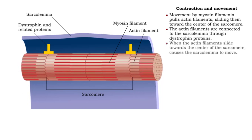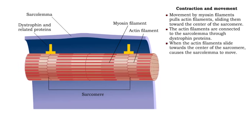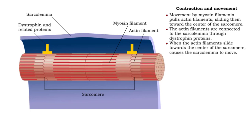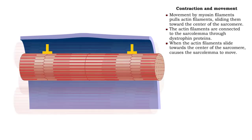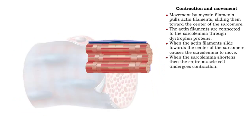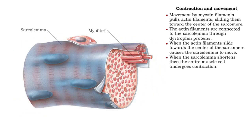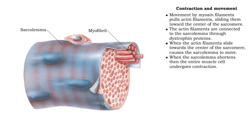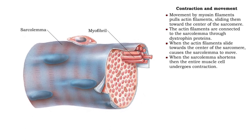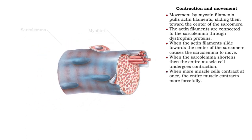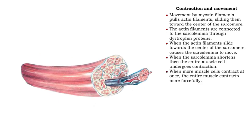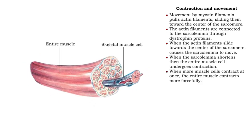The shortening sarcomere causes the sarcomere to move. As the sarcomere is shortened, the entire muscle cell contracts. The more muscle cells that contract, the more forceful the contraction.